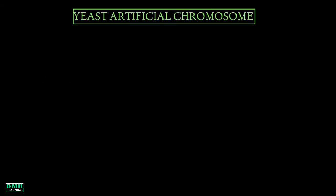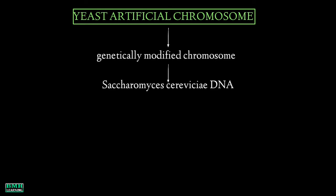Welcome to BMH Learning. We are doing vectors, and this video will deal with yeast artificial chromosome. A yeast artificial chromosome is a genetically engineered chromosome derived from the DNA of yeast — Saccharomyces cerevisiae. The manipulated DNA of yeast is then ligated into a bacterial plasmid.